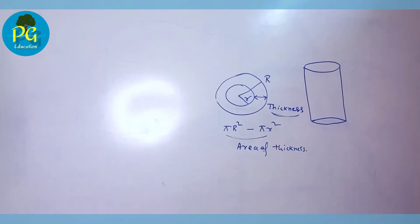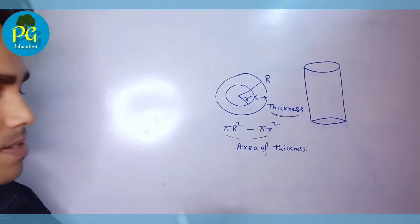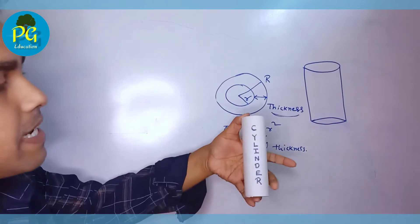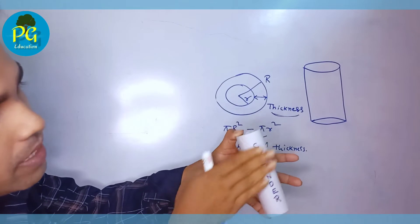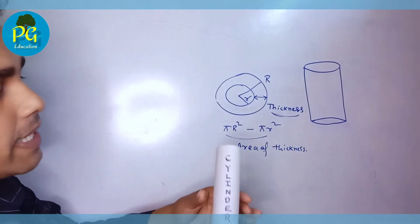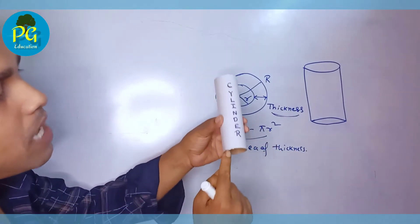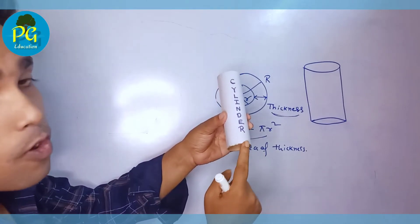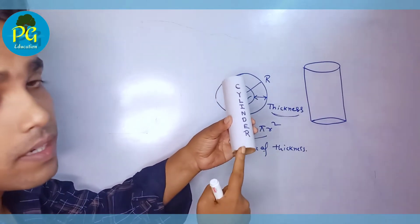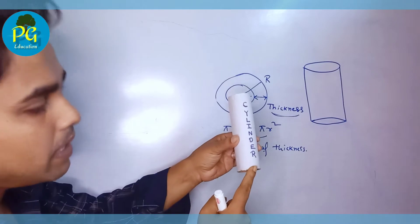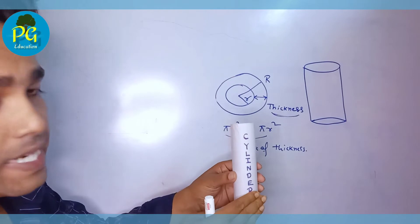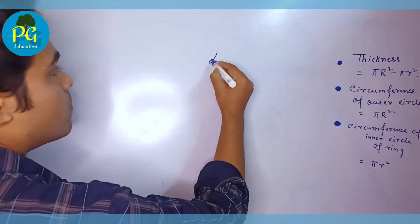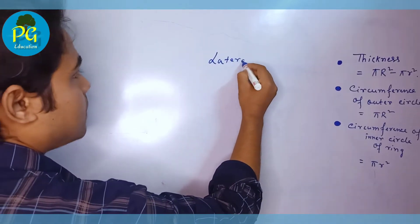If the question is to find out the lateral surface area — lateral surface area means the outer side only; this outer region is called the lateral surface. To find the lateral surface area, first we have to find out the circumference of the outer circle, then multiply by its height. In this way we can find out the area of the lateral surface.